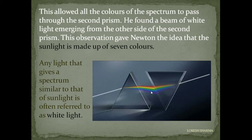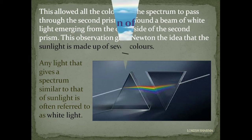When these seven colors pass through a prism placed in an inverted position, a white beam of light comes out. This is because the two interfaces are parallel to each other, so the bending at opposite interfaces is equal in magnitude but opposite in direction. Thus the different colors combine and white light comes out. Hence, any light that gives a spectrum similar to sunlight is referred to as white light.